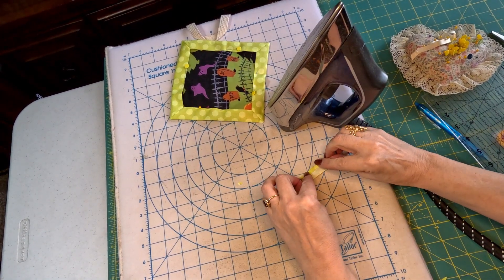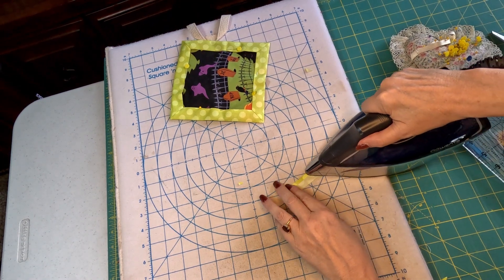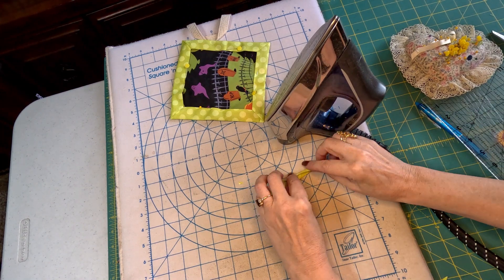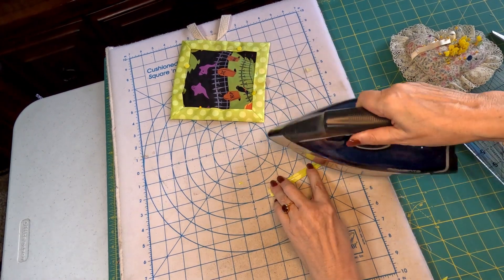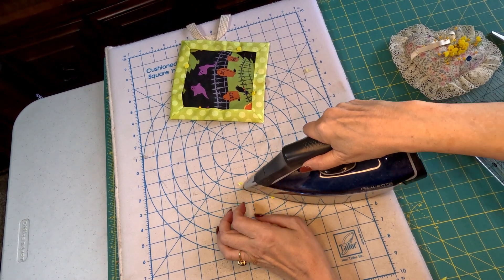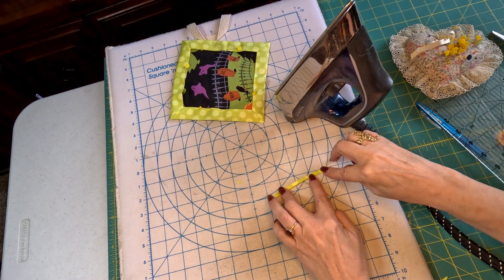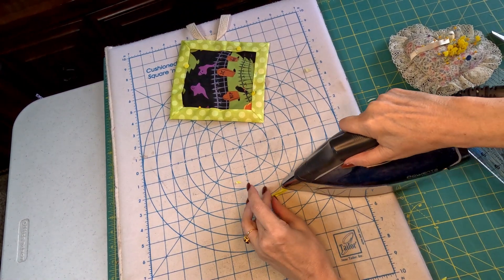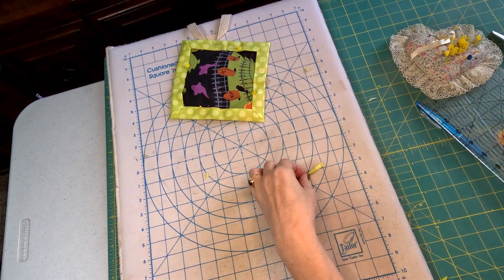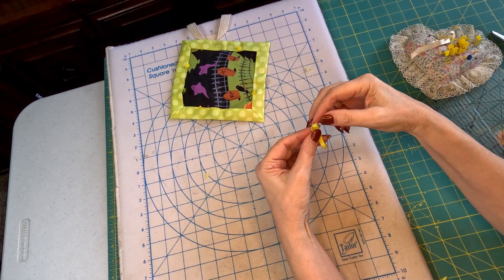We're gonna iron it down the center, then turn it in halfway on each side. Then fold it together so it's about a quarter of an inch.